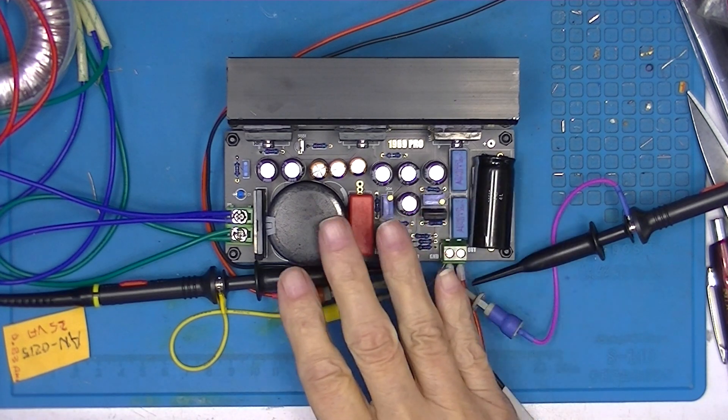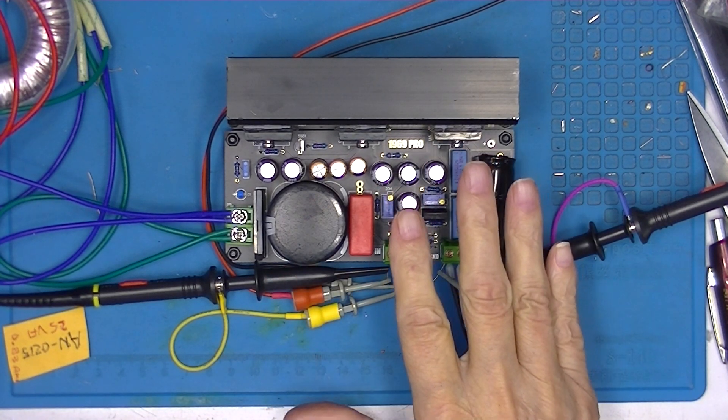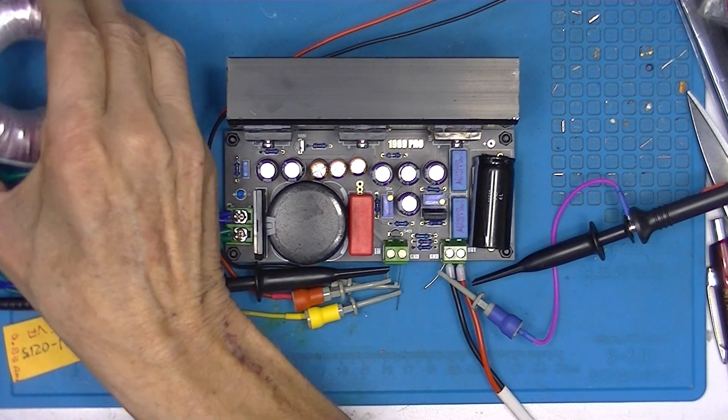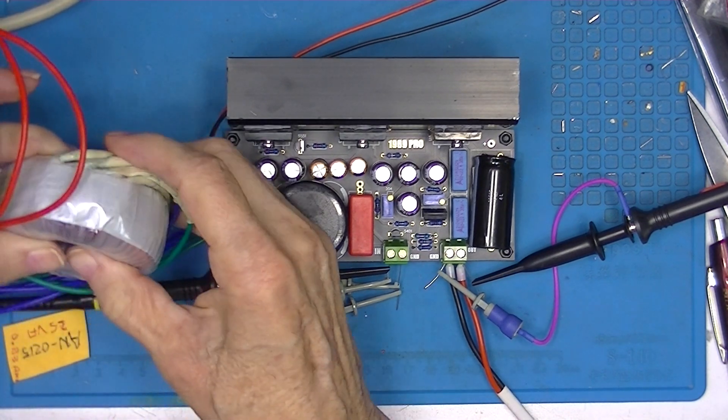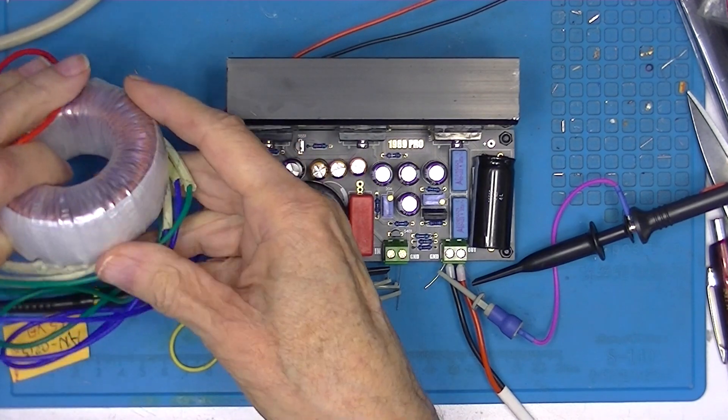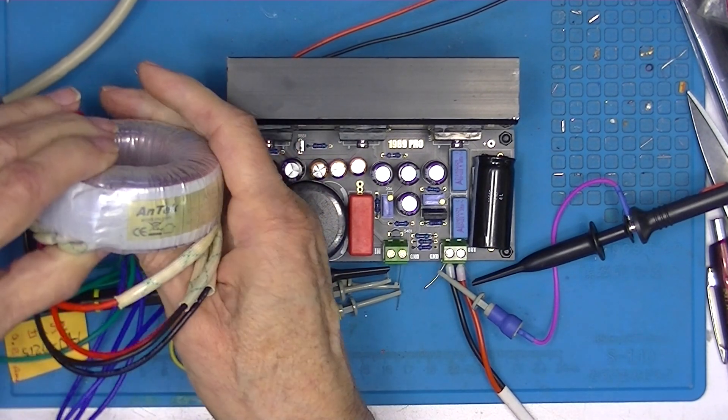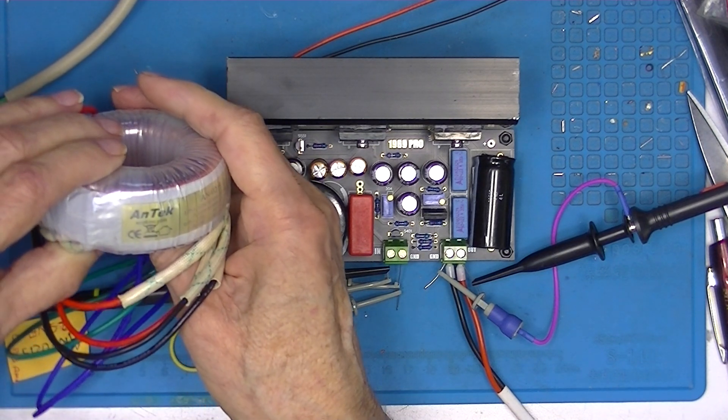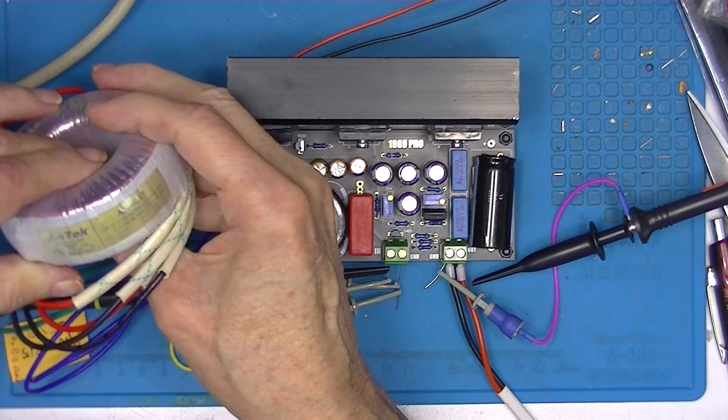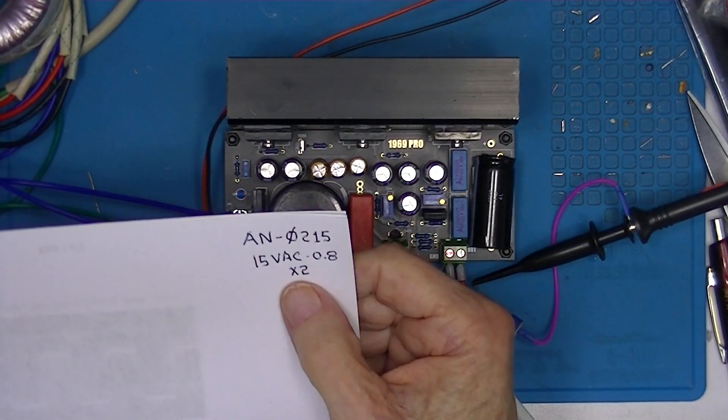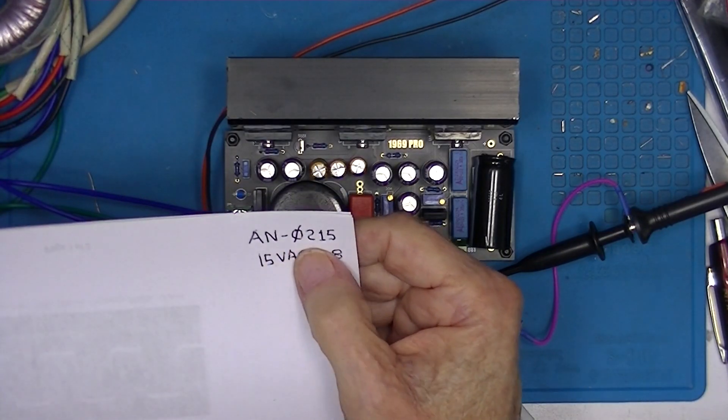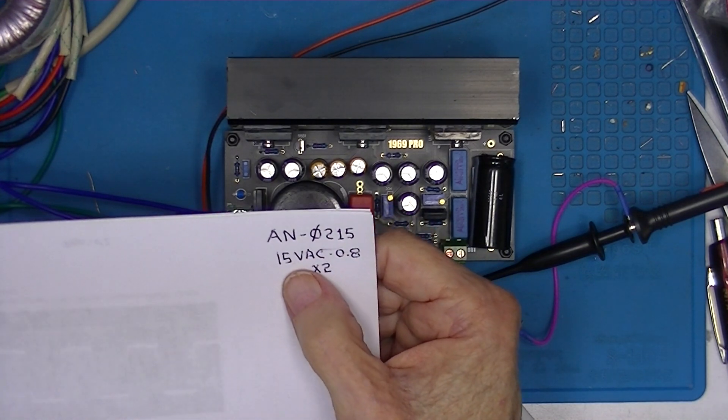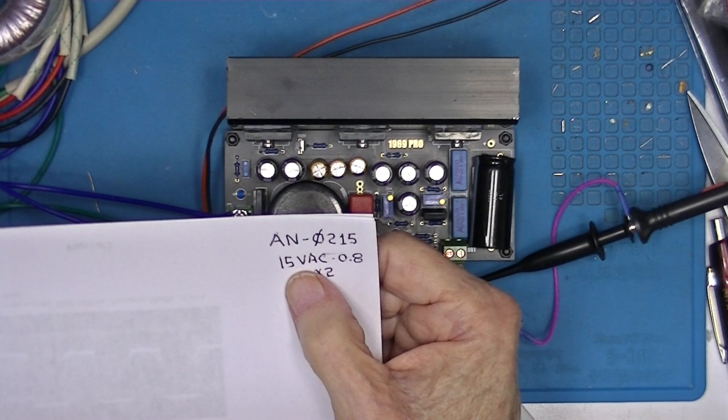This is the same setup as I had in the last video, except I've got this toroidal transformer here. It's an Antec transformer, model AN-0215. You can look that up on eBay. It has two secondaries, 15 volts